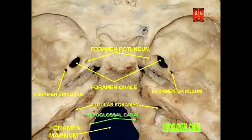What all passes through the foramen magnum? The spinal roots of cranial nerve 11, the brainstem, and vertebral arteries pass through the foramen magnum.